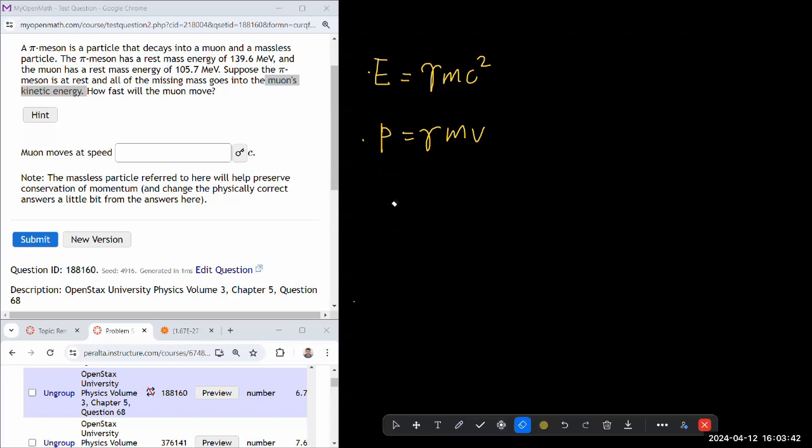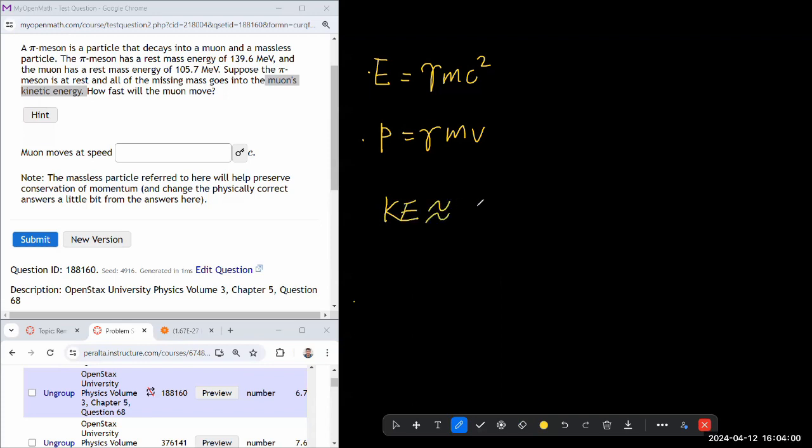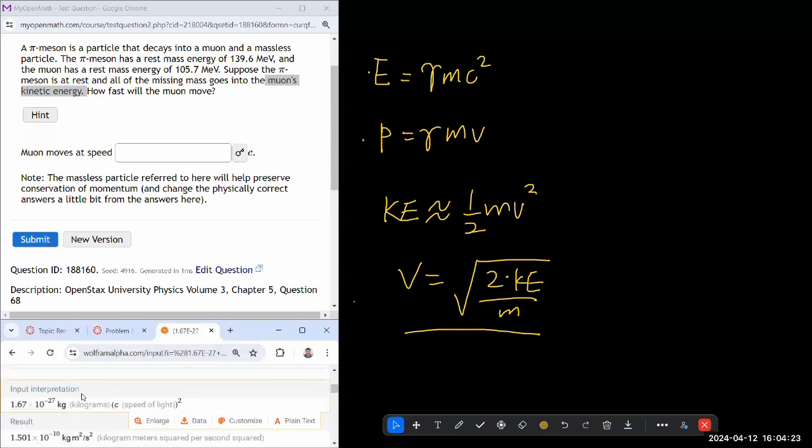So what I would say is we say all of the missing mass goes into muon's kinetic energy. So I don't know if I can use the non-relativistic kinetic energy formula of one half mv squared. Because if that were to apply, then v is kind of simple. It's going to be square root of two kinetic energy over m. I have a feeling that won't work, but let me give it a try first, and then if it didn't work, then we can try a more robust method.